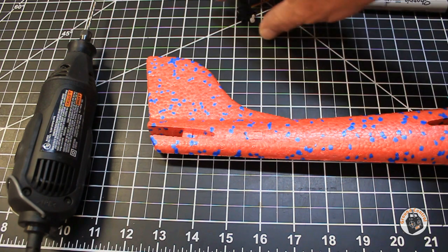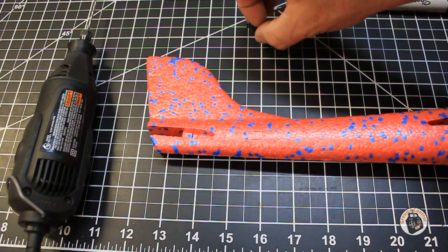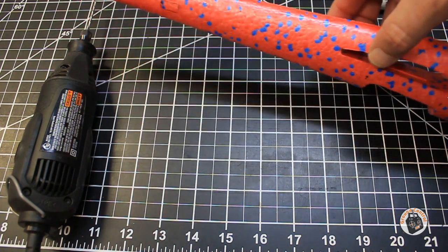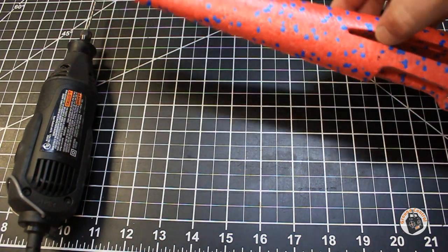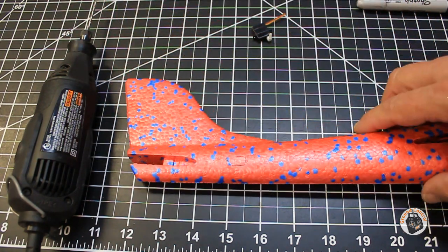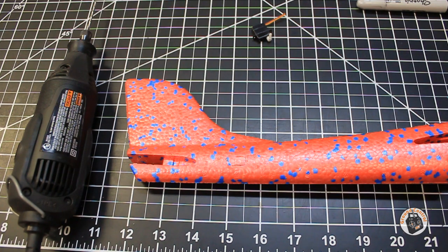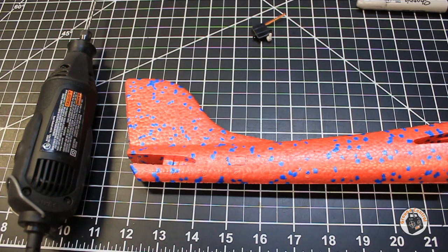You don't want to put larger, heavier servos in, and then find out after you get the glider all together that you can't get the CG correct on it. So I'm going to start on that, and we'll be back to take a look at the finished product.